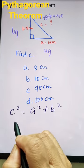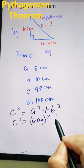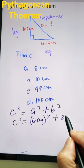Now, we can simply substitute what is a. A is 6 centimeters, we need to square that, plus b, which is 8 centimeters, and then square that.